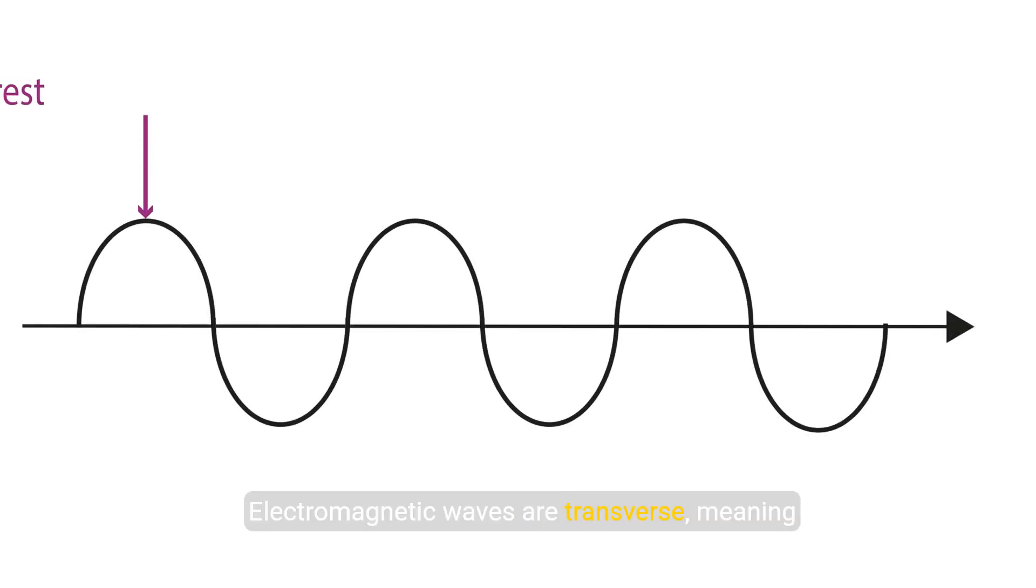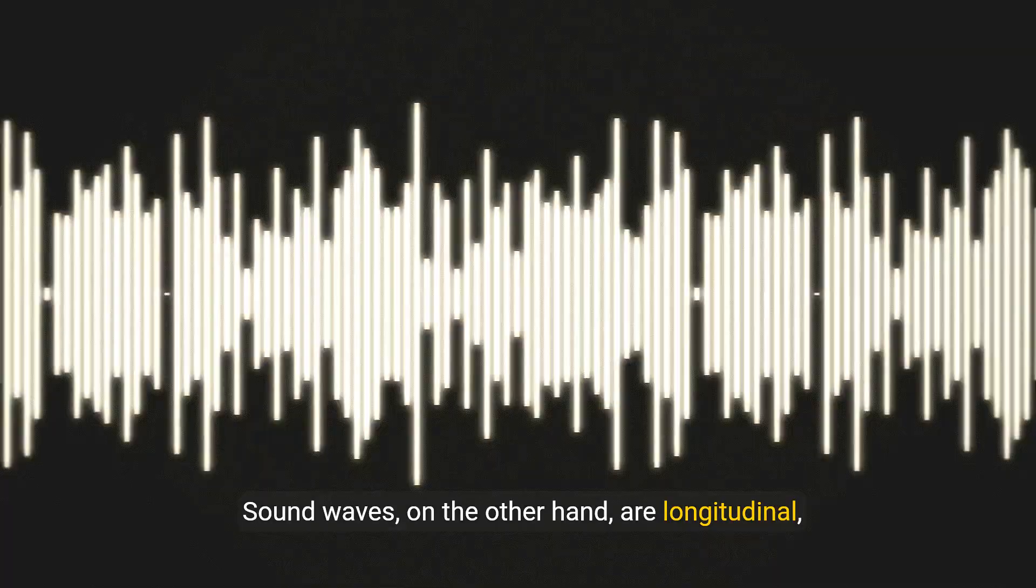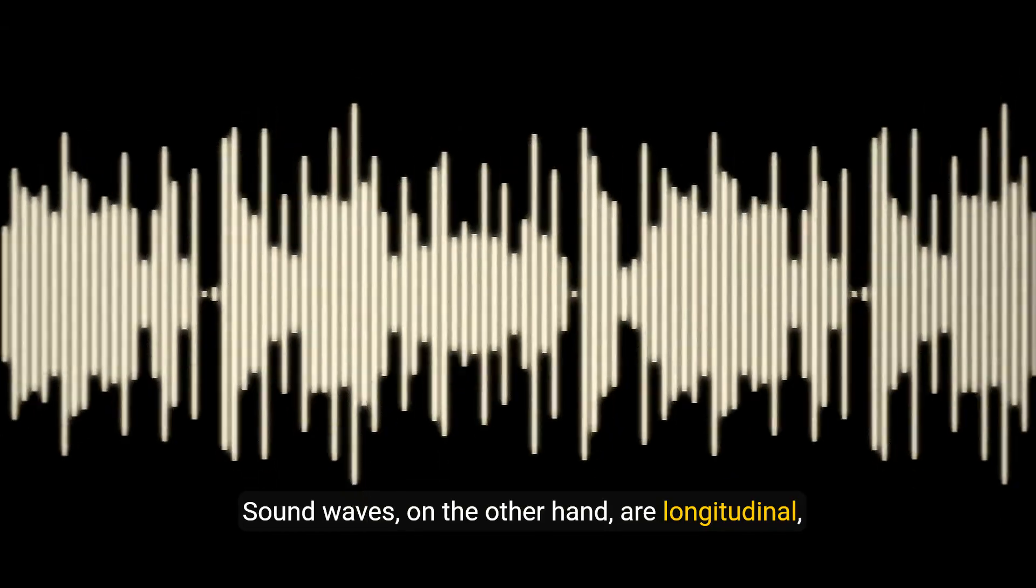To understand these waves better, consider their properties. Electromagnetic waves are transverse, meaning their oscillations are perpendicular to the direction of travel. Sound waves, on the other hand, are longitudinal, with oscillations parallel to their movement.